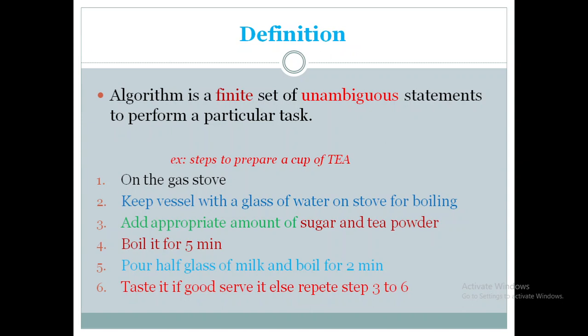How many steps did we write? Six. You can see that six steps means it is finite. Whatever six steps we have written, they are unique. Step 1 is different, step 2 is different. We turn on the gas only once, not again and again. We boil it for only 5 minutes, not the entire day. This is called an algorithm.